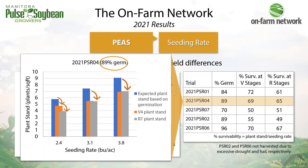Also not measured here was lodging — lower plant stands aren't going to hold each other up as well at harvest time. That's important to pay attention to. I'm really excited to keep exploring this trial type in the future as we keep digging into pea plant stands.